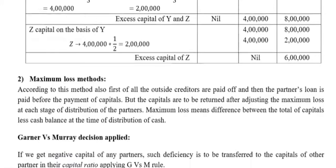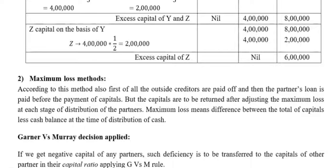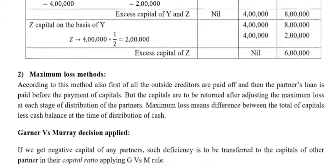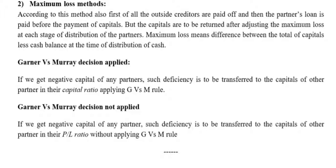Second method — Maximum Loss method. According to this method, outside creditors are paid off first and partners' loan is paid before payment of capitals. Capitals are returned after adjusting the maximum loss at each stage of distribution. Maximum loss means the difference between total capitals plus cash balance at the time of distribution. Garner vs. Murray decision applied: if we get a negative capital of any partner, such deficiency is transferred to the capitals of the other partners in their capital ratio. When not applied, the deficiency is transferred in their profit and loss ratio.